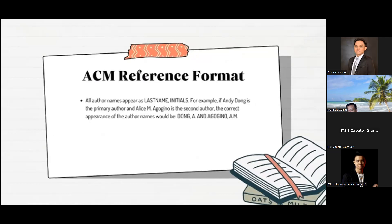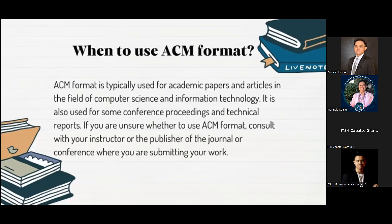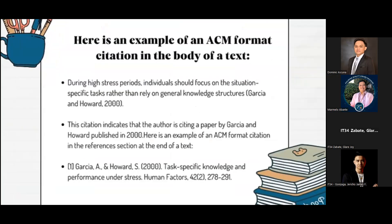When to use ACM format: ACM format is typically used for academic papers and articles in fields of computer science and information technology. It is also used for conference proceedings and technical reports. If you are unsure whether to use ACM format, consult with your instructor or the publisher of the journal or conference where you are submitting your work. Here is an example of ACM format citation in the body of text: During high stress periods, individuals should focus on the situation-specific task rather than rely on general knowledge structures (Garcia and Howard, 2000). This citation indicates that the author is citing a paper by Garcia and Howard published in 2000.